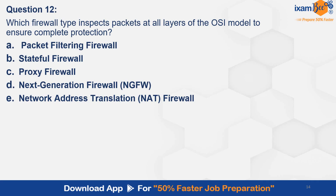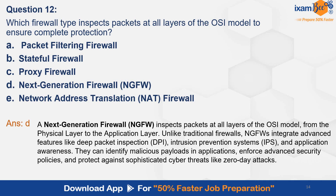Question 12. Which firewall type inspects packets at all layers of the OSI model to ensure complete protection? Option A. Packet filtering firewall. B. Stateful firewall. C. Proxy firewall. D. Next generation firewall. And the correct answer is D — next generation firewall. NGFW inspects packets at all layers of the OSI model, from the physical layer to the application layer. Unlike traditional firewalls, NGFWs integrate advanced features like deep packet inspection, intrusion prevention systems, and application awareness. They can identify malicious payloads in applications, enforce advanced security policies, and protect against sophisticated cyber attacks such as zero-day attacks.